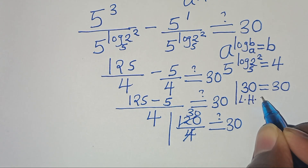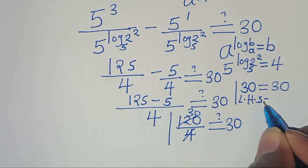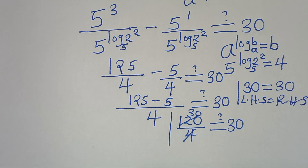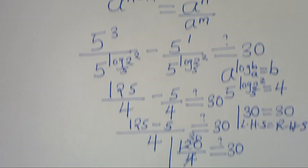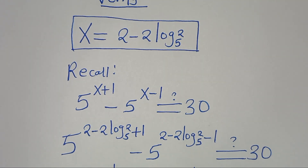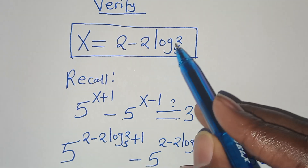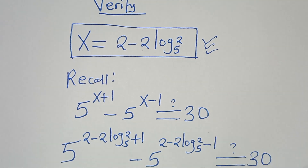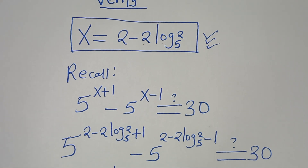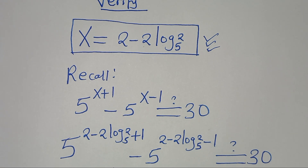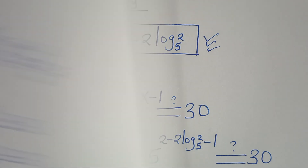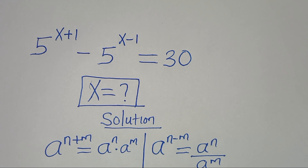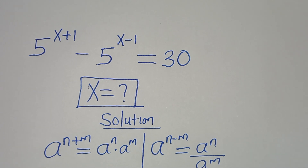So the left hand side is equal to 30 as well as the right hand side, and this affirms that the value of x, which is equal to 2 minus 2 log 2 to base 5, actually satisfies the equation. So kindly follow the steps, like this video, and kindly subscribe. See you in the next video, bye bye for now.